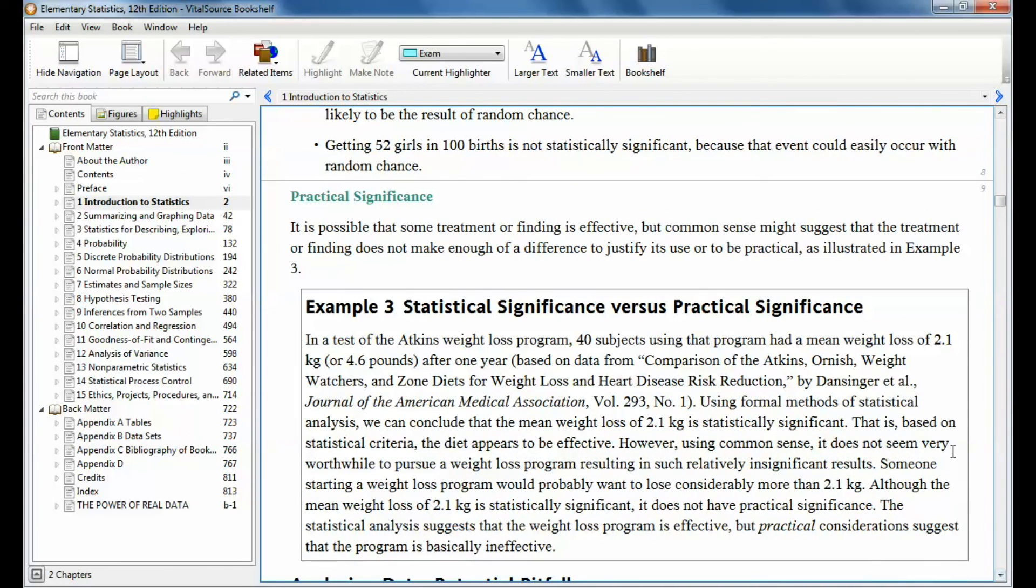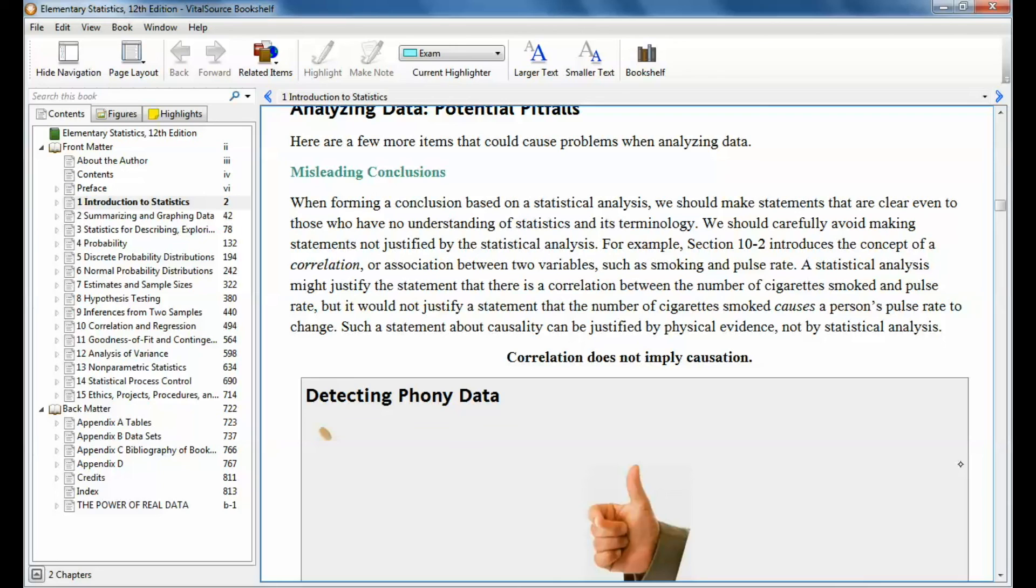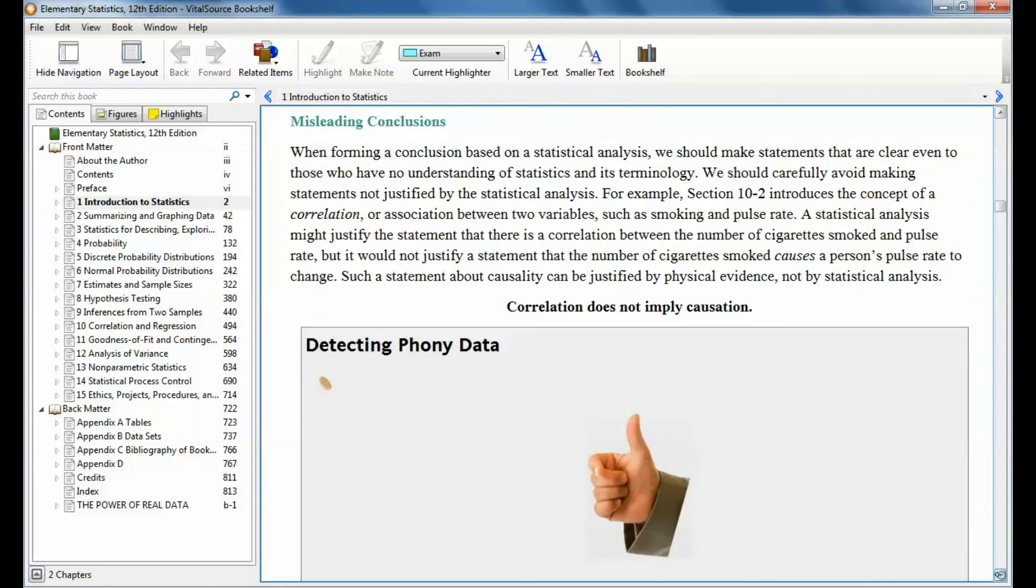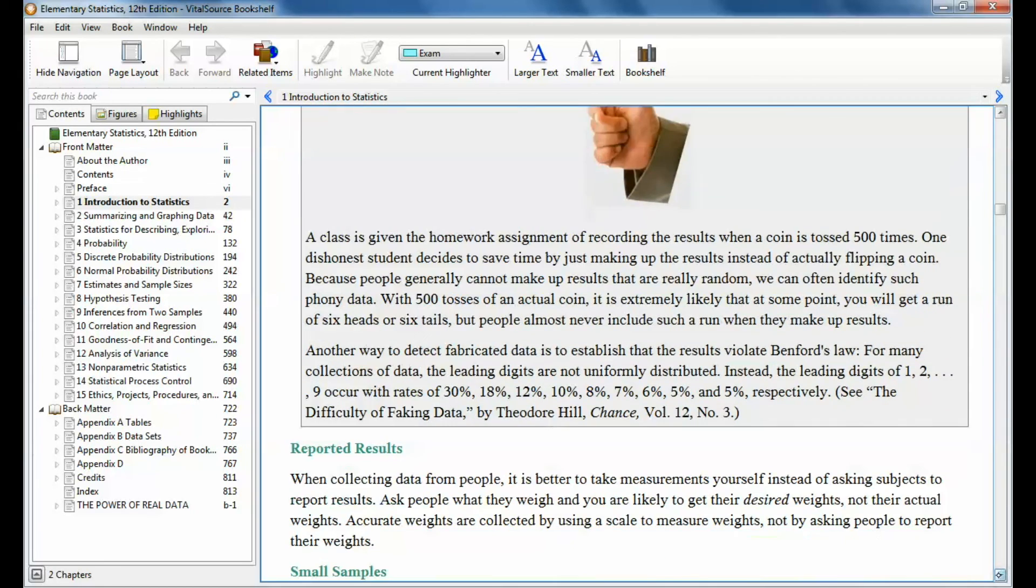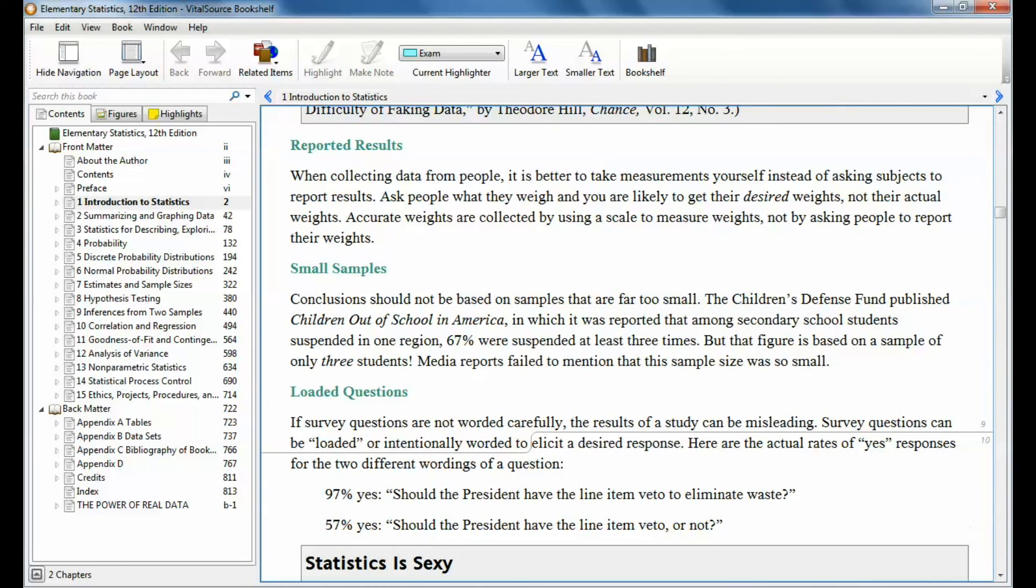Practical significance. There's a couple of examples here in the book that you can read through on practical significance. Misleading conclusions. Just like I was telling you that bar graph. That was very misleading. And here's a couple of examples about phony data. Reported results. It says when collecting data from people, it is better to make measurements yourself instead of asking subjects to report results. Ask people what they weigh and you are likely to get their desired weights. Not their actual weights. Accurate weights are collected by using a scale to measure weights, not by asking people to report their weights. So can we go around the class and I'll ask everybody how much they weigh? No. That's a touchy topic.